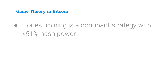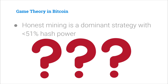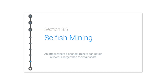We can take these concepts and start analyzing protocols like Bitcoin. For example, one property we might want is that honest mining is a dominant strategy as long as you don't have the majority of power. Of course, with 51% of the hash power you can potentially make more money by reverting history, double spending, or censoring people who don't pay above a certain transaction fee. But it turns out there could be a different dishonest mining strategy that gives a better payoff even with less than 51% of the hash power — and we'll cover one such strategy in the next lecture, section 3.5 on selfish mining.